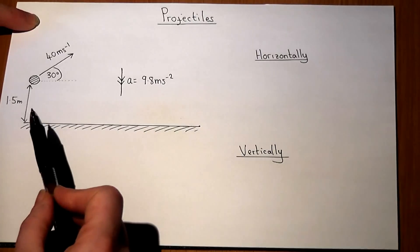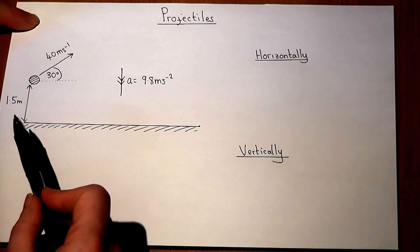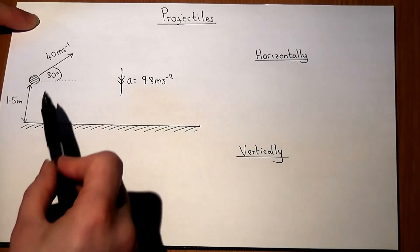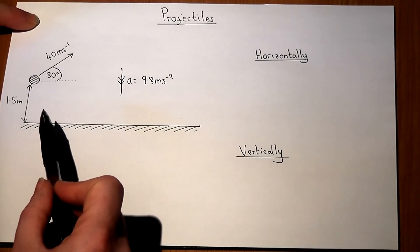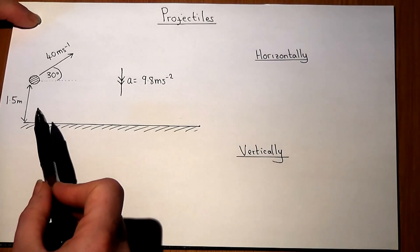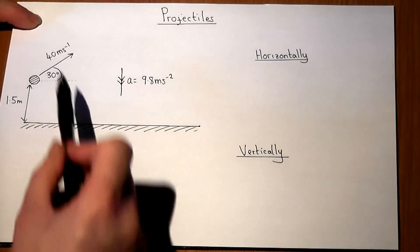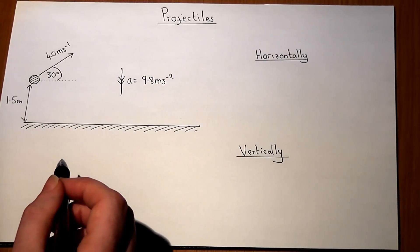Now the trick to this sort of question is to split into components, horizontal and vertical components of motion. The first step is always to resolve the initial speed into the adjacent and opposite components.